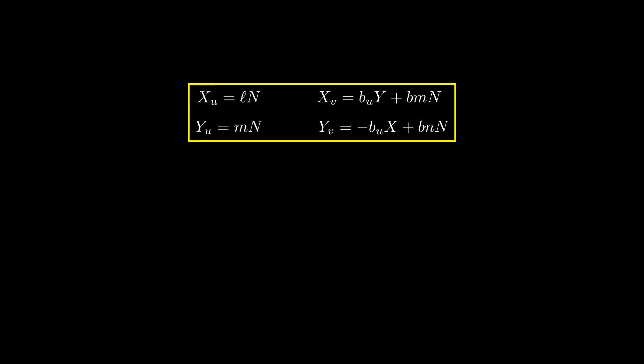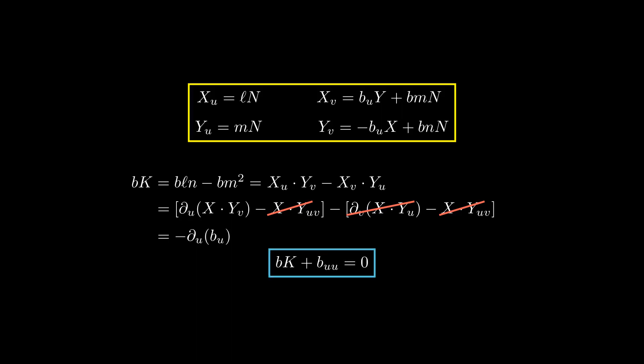Finally, the Gauss curvature K is the determinant of the shape operator. Then VK equals VLN minus VM squared. The first term equals XU times YV, while the second term equals XV times YU. We then rewrite each term using the product rule. The first one equals the derivative of X.YV with respect to U, minus X.YUV. The second one equals the derivative of X.YU with respect to V, minus X.YUV. We cancel the repeated term, and then, by plugging in YV and XU from the above formulas, we get precisely minus VUU, finishing the proof.